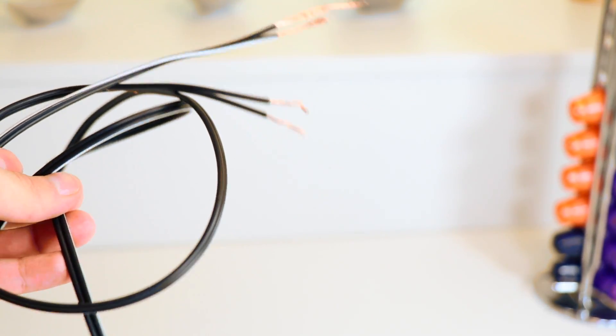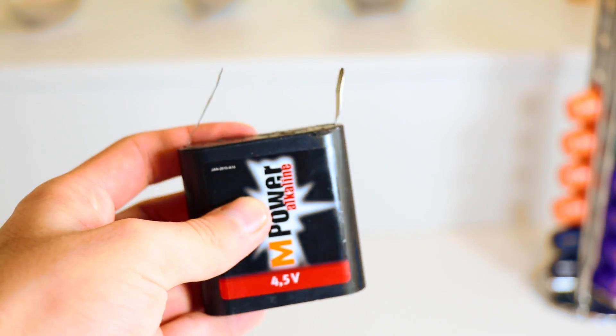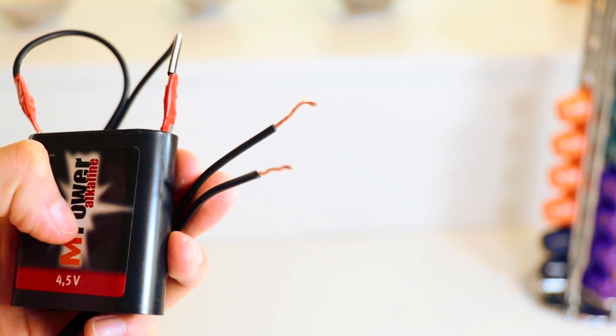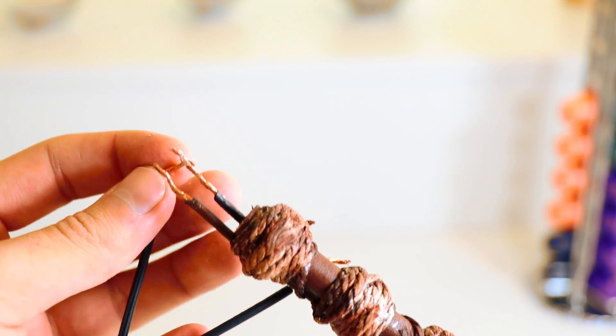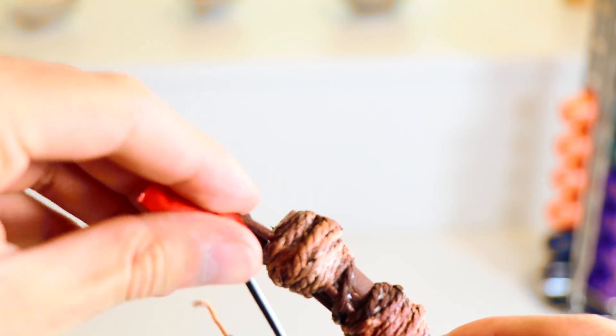Now take a longer length of wire. Then grab a 4.5 volt battery. Now wrap the wire around the battery and secure it using some tape. Now finally connect the two wires coming from the battery to the two wires coming from the wand.